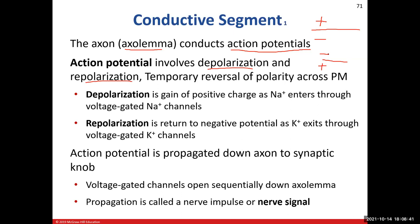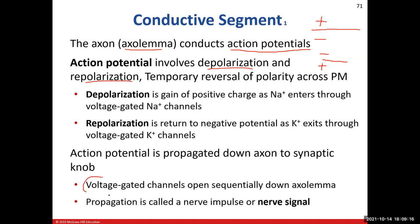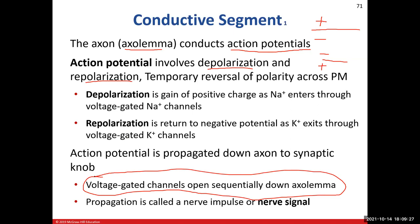Repolarization returns our membrane potential back to the resting value of negative 70 millivolts. We open voltage-gated potassium channels and let potassium leave the cell, taking its positive charge with it, making the inside more negative again. This is how we propagate the action potential all the way down the axon to the synaptic knobs. Essentially, voltage-gated channels open up sequentially all the way down the axolemma — like dominoes falling — and that's how we generate our nerve signal.